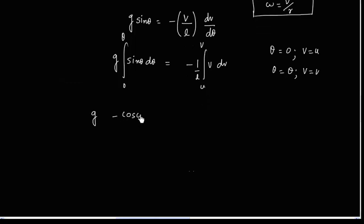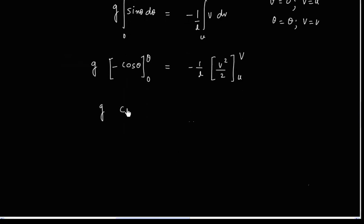So sin theta is minus cos theta. And integration of v is v square by 2. So we can cancel the negative sign on both sides. Take the L to this side.